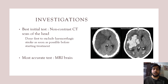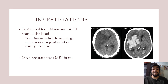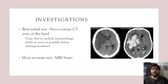For investigations in stroke, the best initial test is a non-contrast CT scan of the head, done to exclude hemorrhagic stroke as quickly as possible so treatment can start. The most accurate test is MRI brain, but it takes considerably longer. You can see on the image to your right how an ischemic versus hemorrhagic stroke appears.